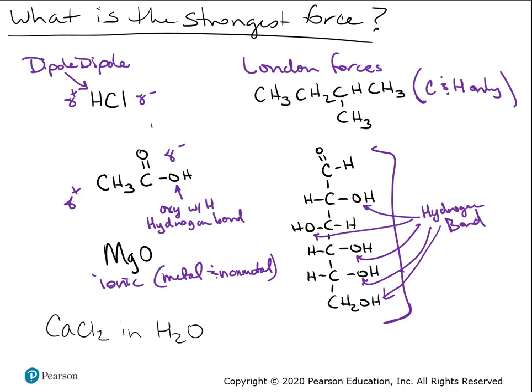And then the last one, calcium chloride in water. This one's ion-dipole. The way you recognize that is anytime you see a salt — a metal and a nonmetal, an ionic compound in water — that shows it's dissolved in water. When calcium chloride dissolves, the calcium is attracted to the negative oxygen of water, and the chloride ions are attracted to the positive hydrogen side of water molecules. That helps disassemble the crystal so all those ions can float in solution, keeping them dissolved.